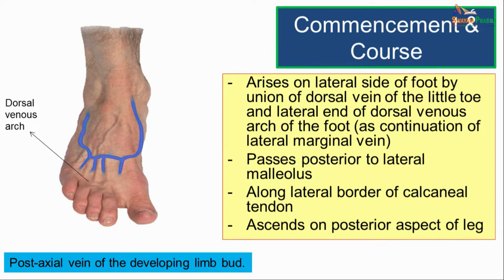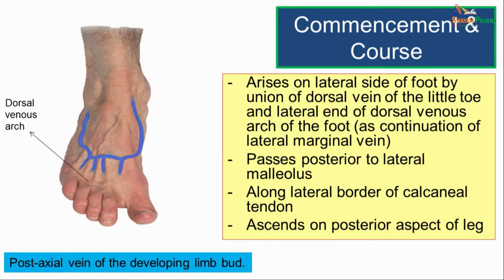The small saphenous vein arises on the lateral side of the foot by union of the dorsal vein of the little toe and the lateral end of the dorsal venous arch of the foot, as continuation of the lateral marginal vein. It passes posterior to the lateral malleolus, runs along the lateral border of the tendocalcaneus (the calcaneal tendon or Achilles tendon), and ascends on the posterior aspect of the leg.